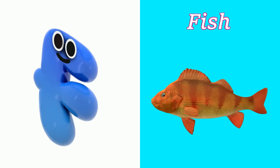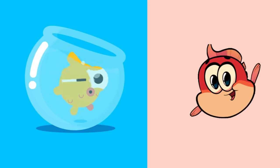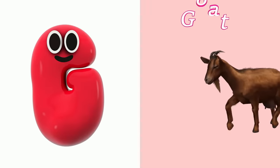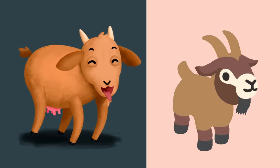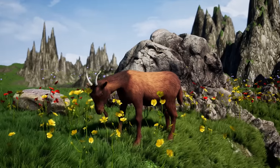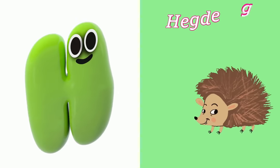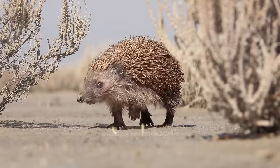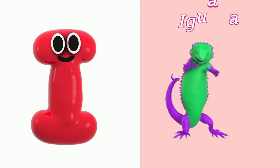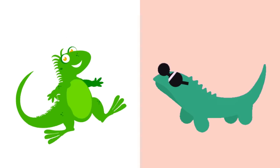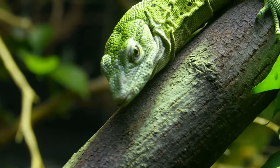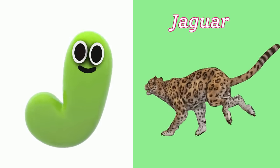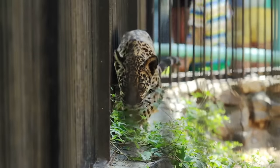F is for Fish. F, F, Fish. G is for Goat. G, G, Goat. H is for Hedgehog. H, H, Hedgehog. I is for Iguana. I, I, Iguana. J is for Jaguar. J, J, Jaguar.